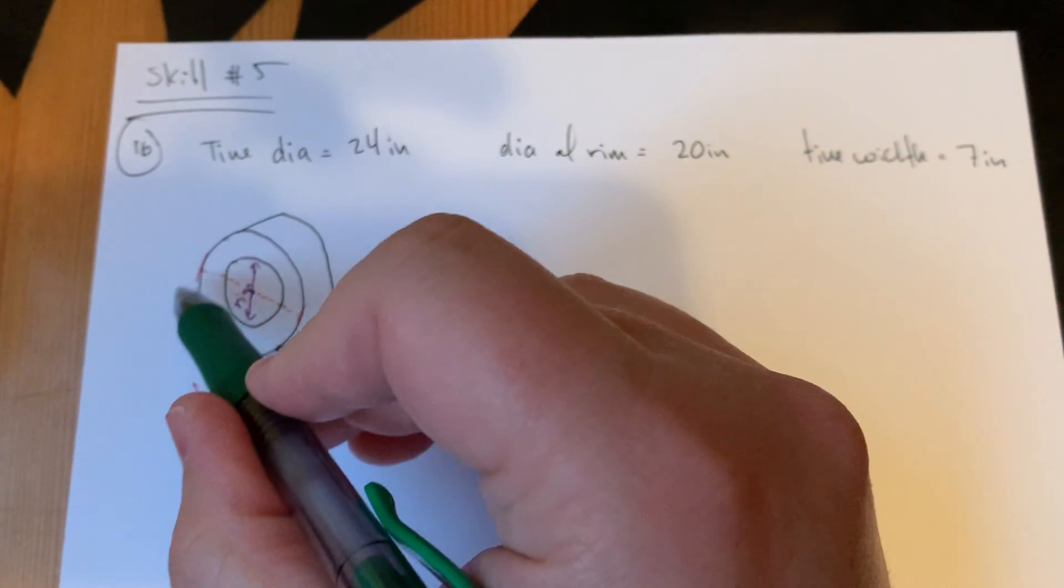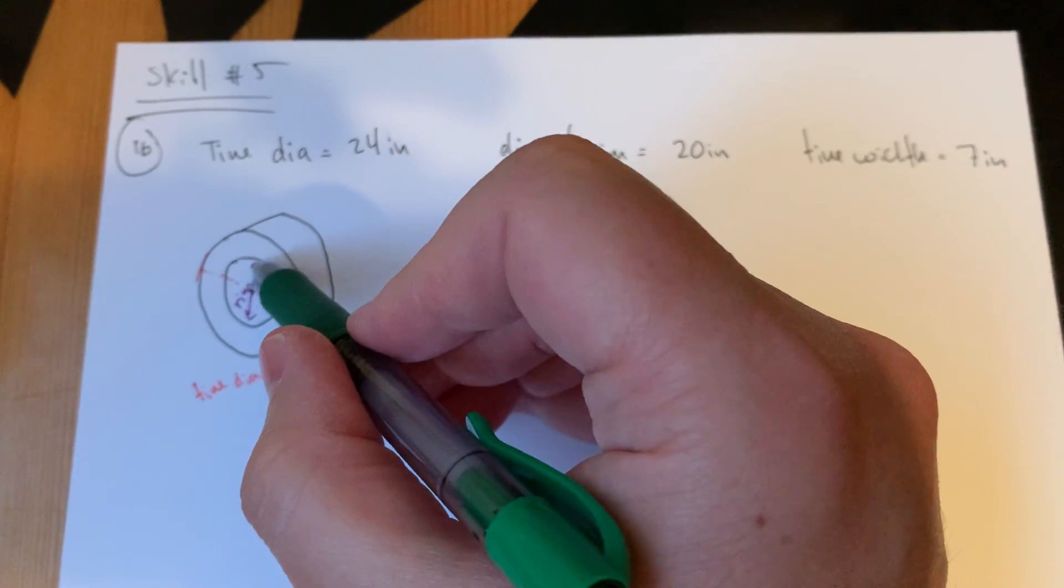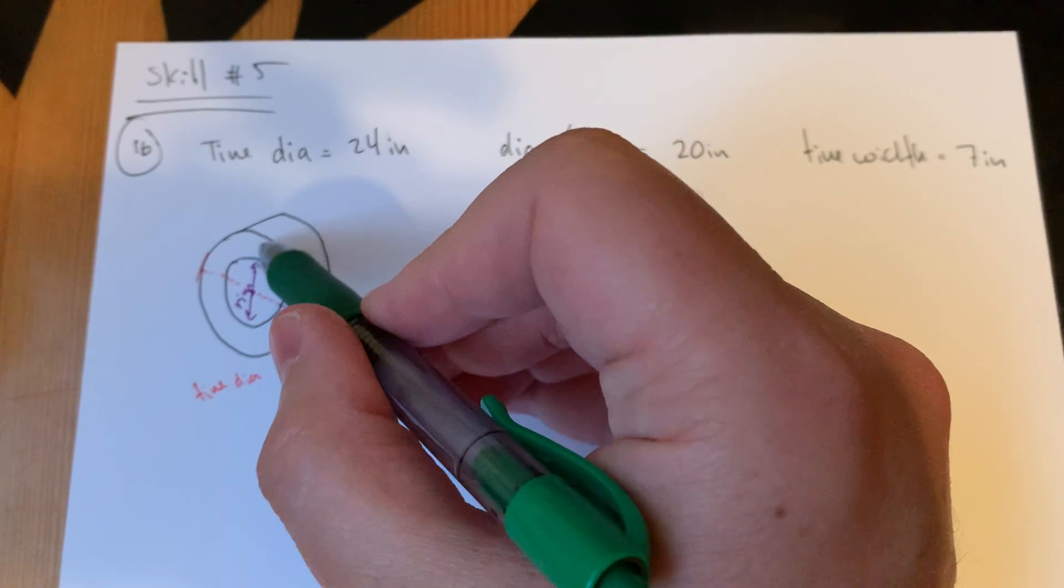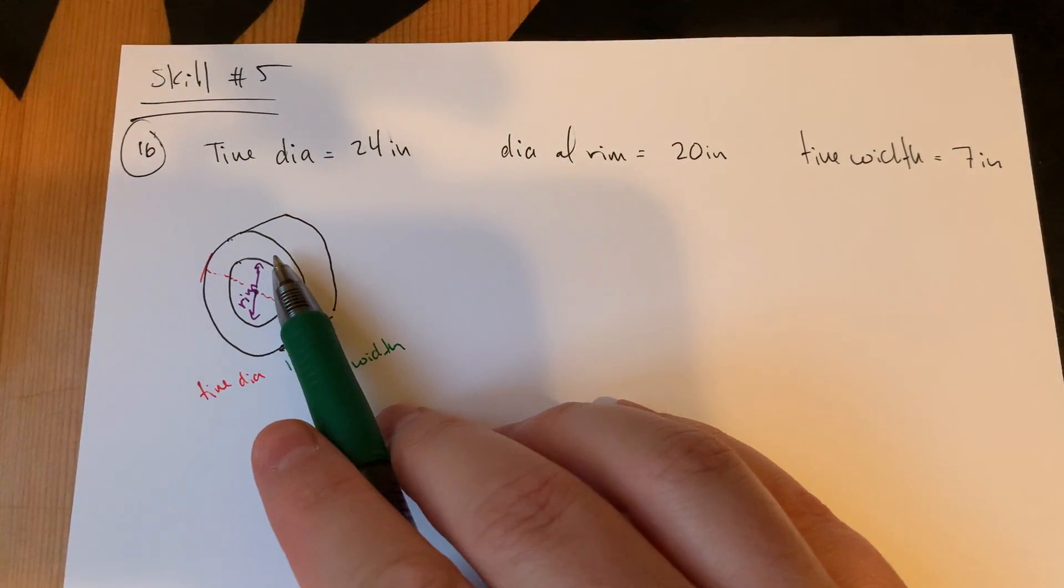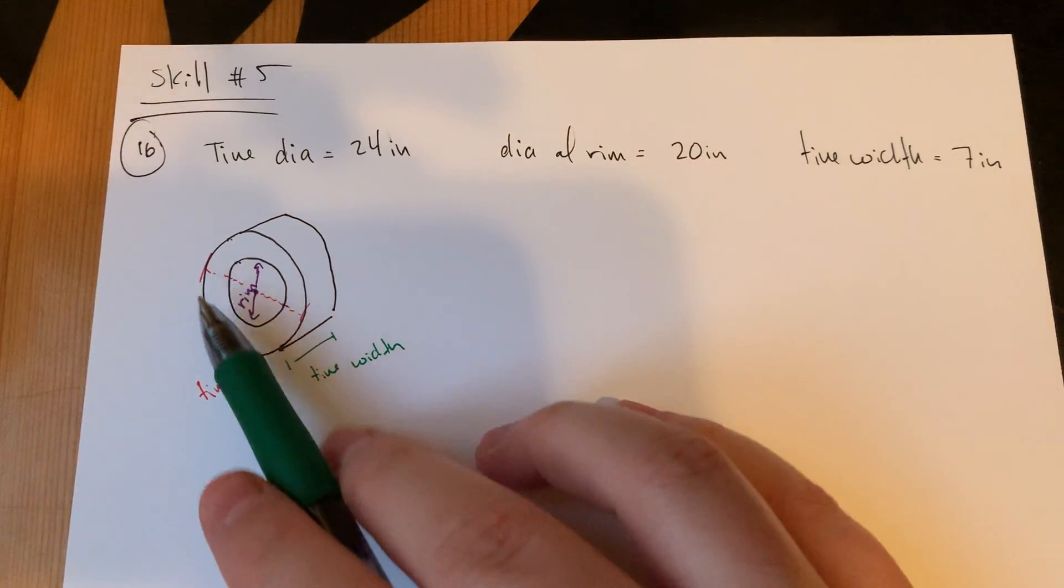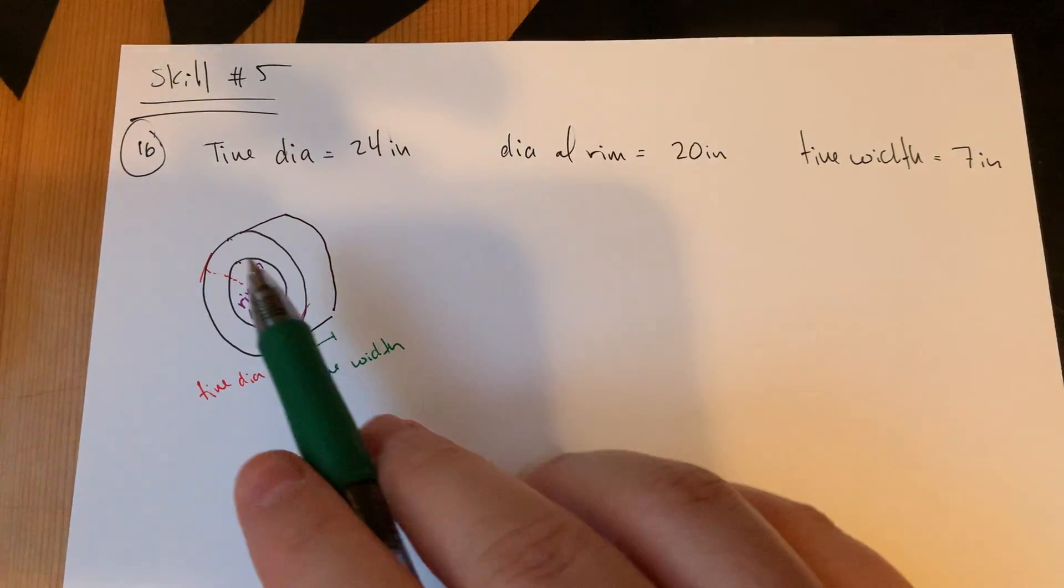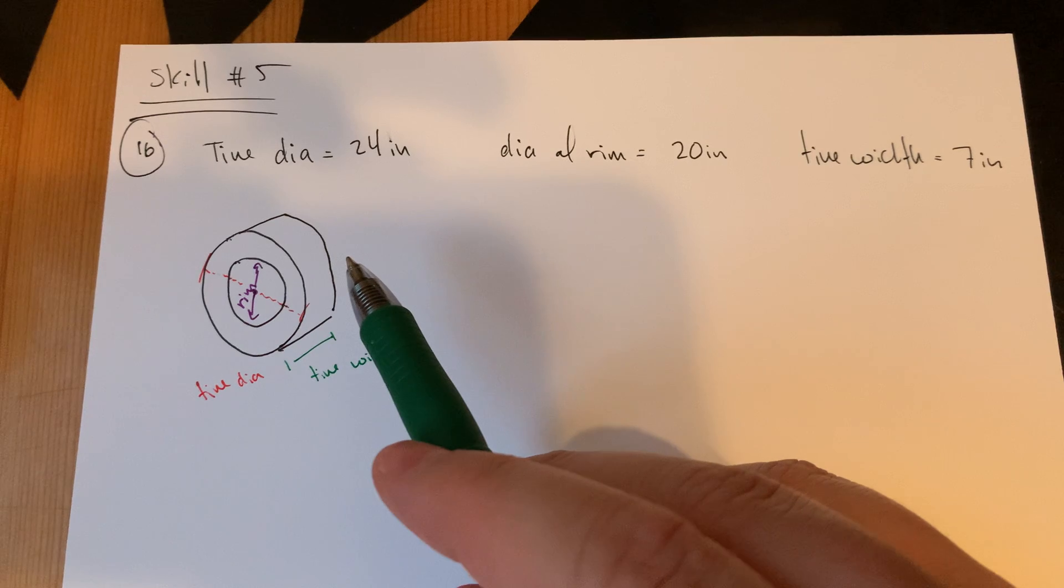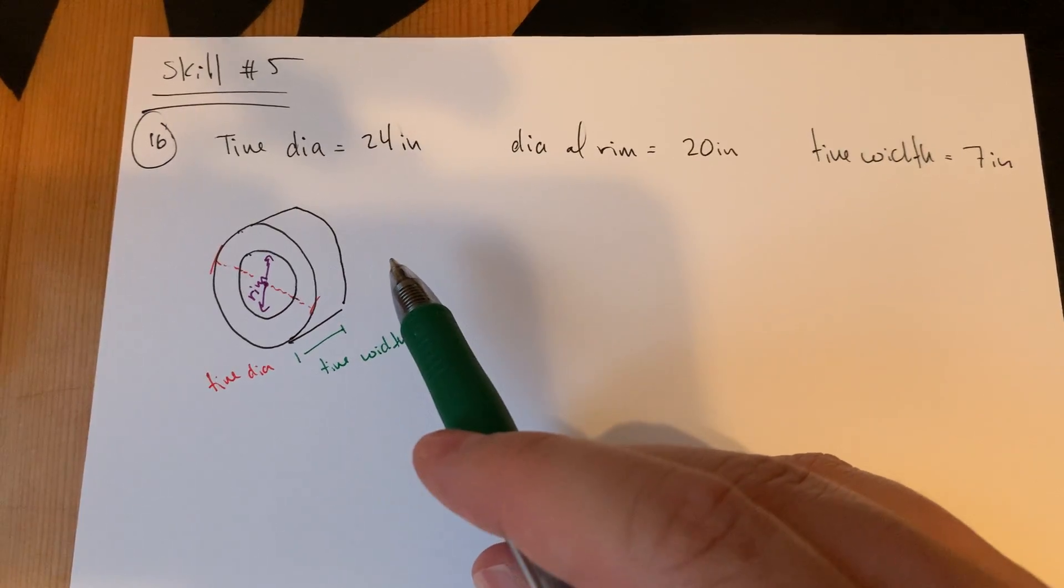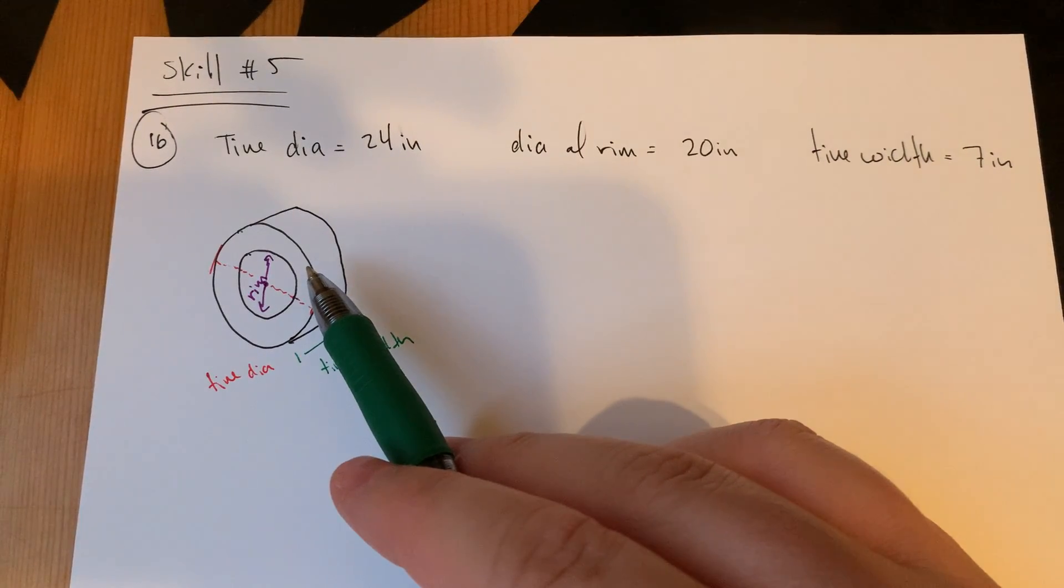And then the width of the tire would be here. So the idea is in the tire on a car, the air is contained only in the parts outside the rim, or between the rim and the edge of the rubber of the tire. So the air only exists out here in this, you know, it's almost like a donut.